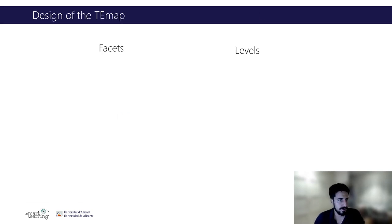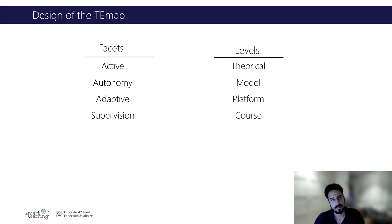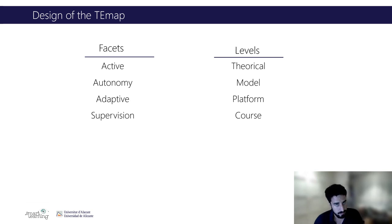For this concrete case, we define four facets for the TA map, which are the four principles we defined before, and four different levels of abstraction: the theoretical level, where the principles are based; the model level; the platform level, how the platform implements them.